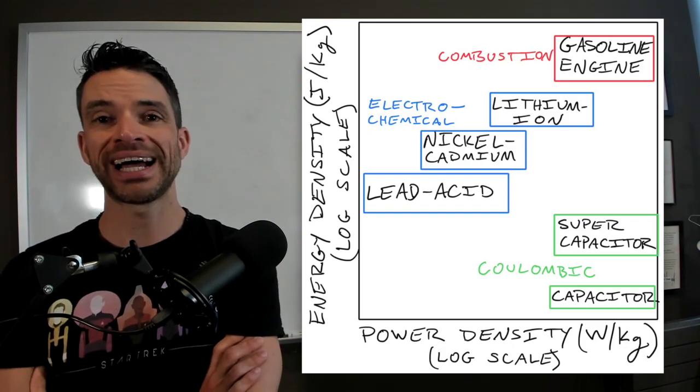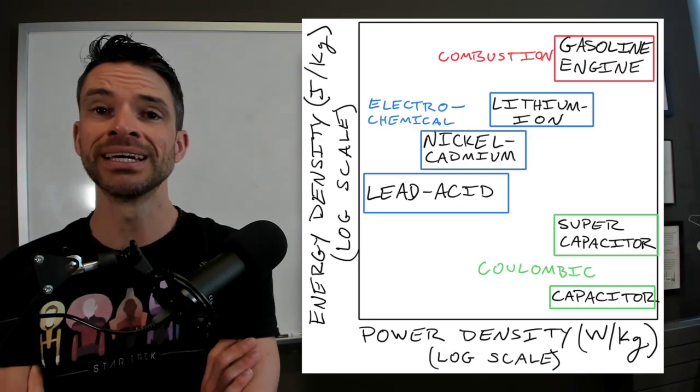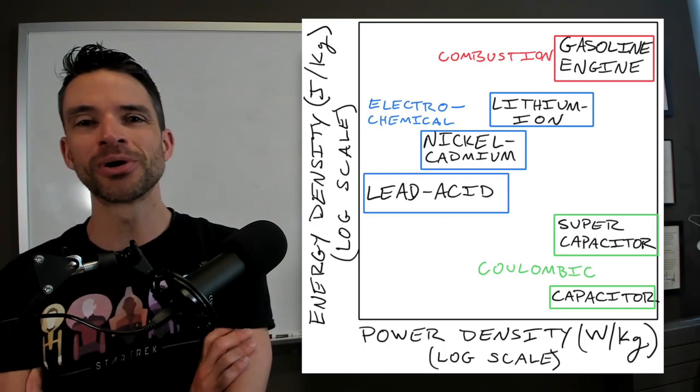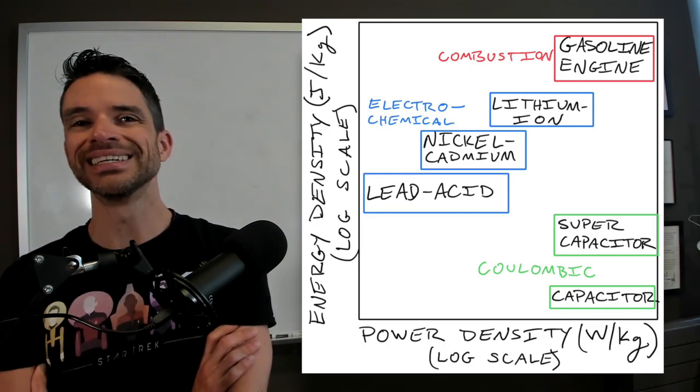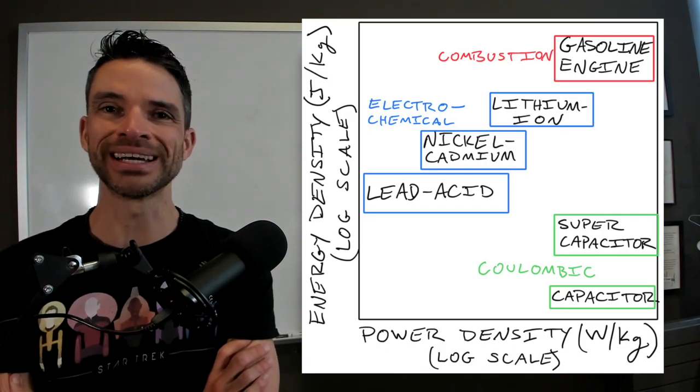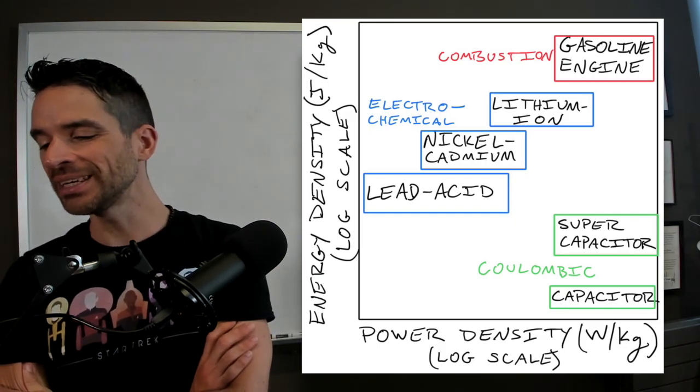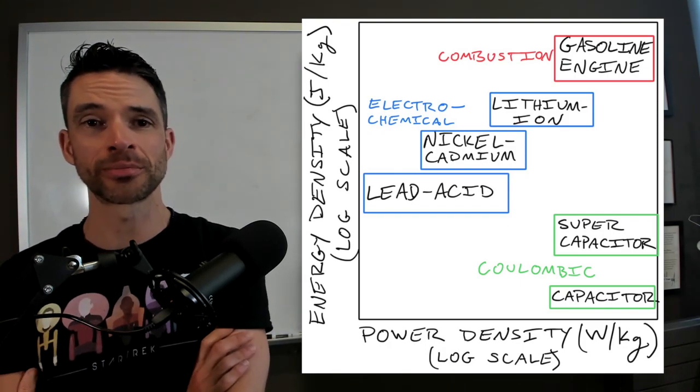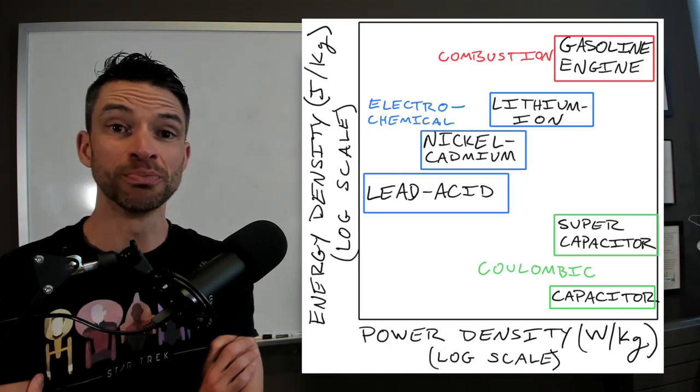So energy density versus power density. Power density is how fast you can deliver that energy. So the absolute best, no compromise solution is a gasoline engine. You get all kinds of energy in the form of hydrocarbon bonds that really want to become carbon dioxide and water when you burn them,